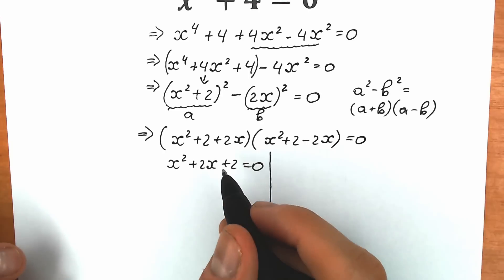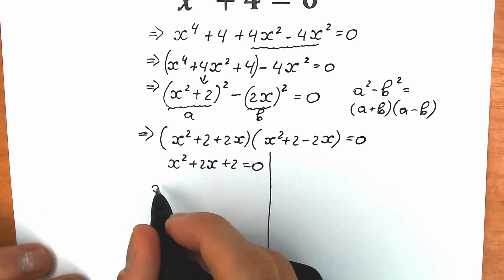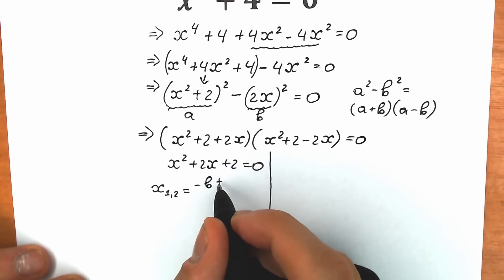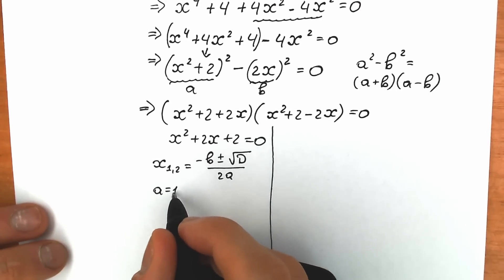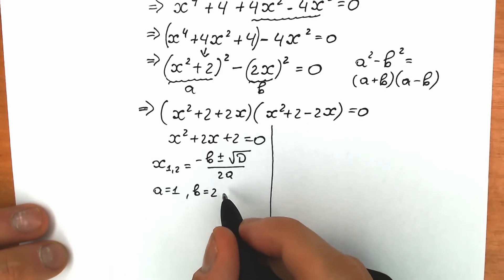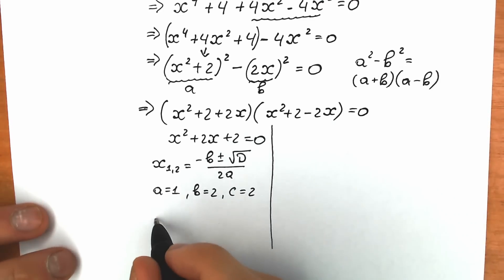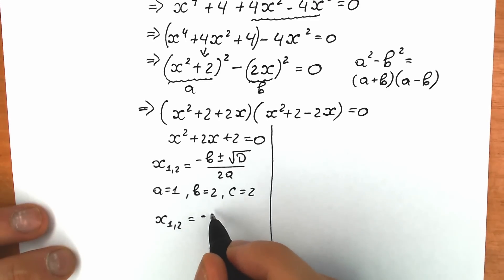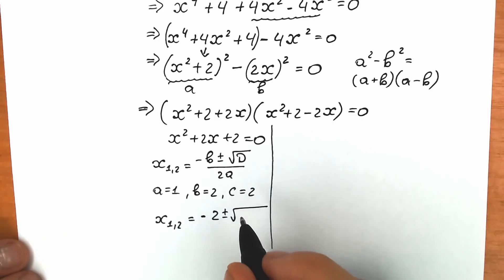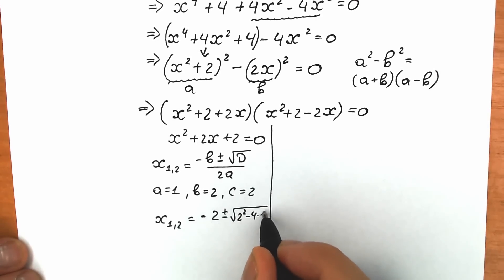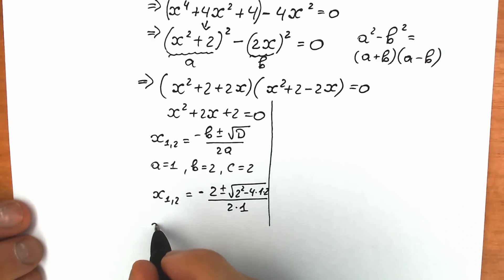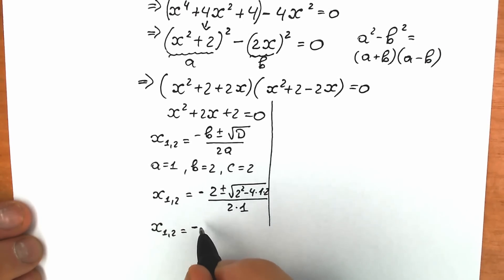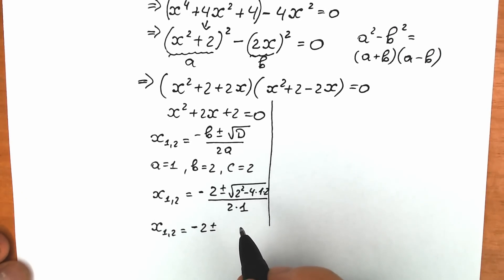According to the quadratic formula, x₁,₂ = (−b ± √discriminant) / (2a). Here a = 1, b = 2, c = 2. Plugging in: x₁,₂ = (−2 ± √(4 − 8)) / 2 = (−2 ± √(−4)) / 2. A lot of students are confused here because we have the square root of a negative number, so we are working with complex numbers, not real numbers.